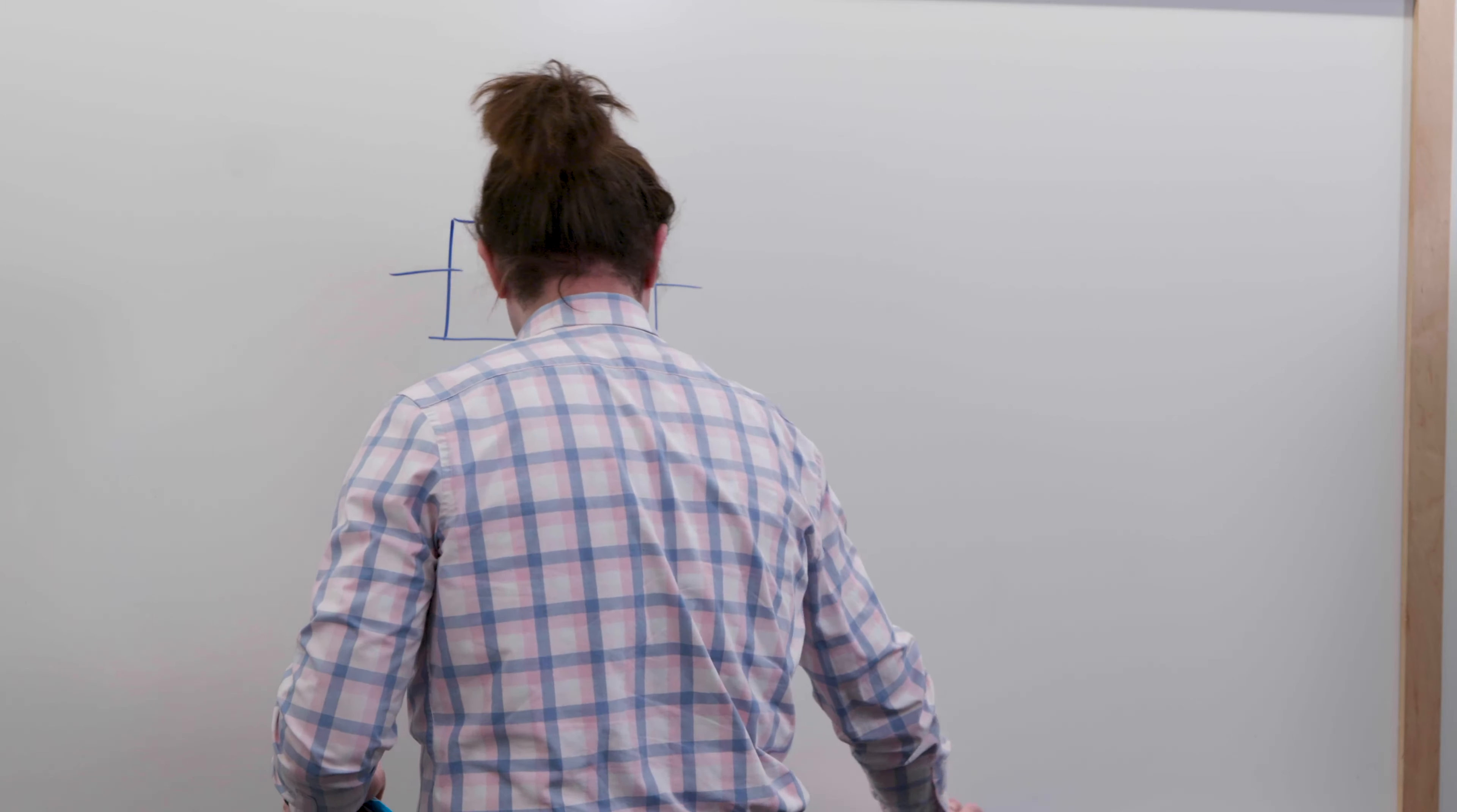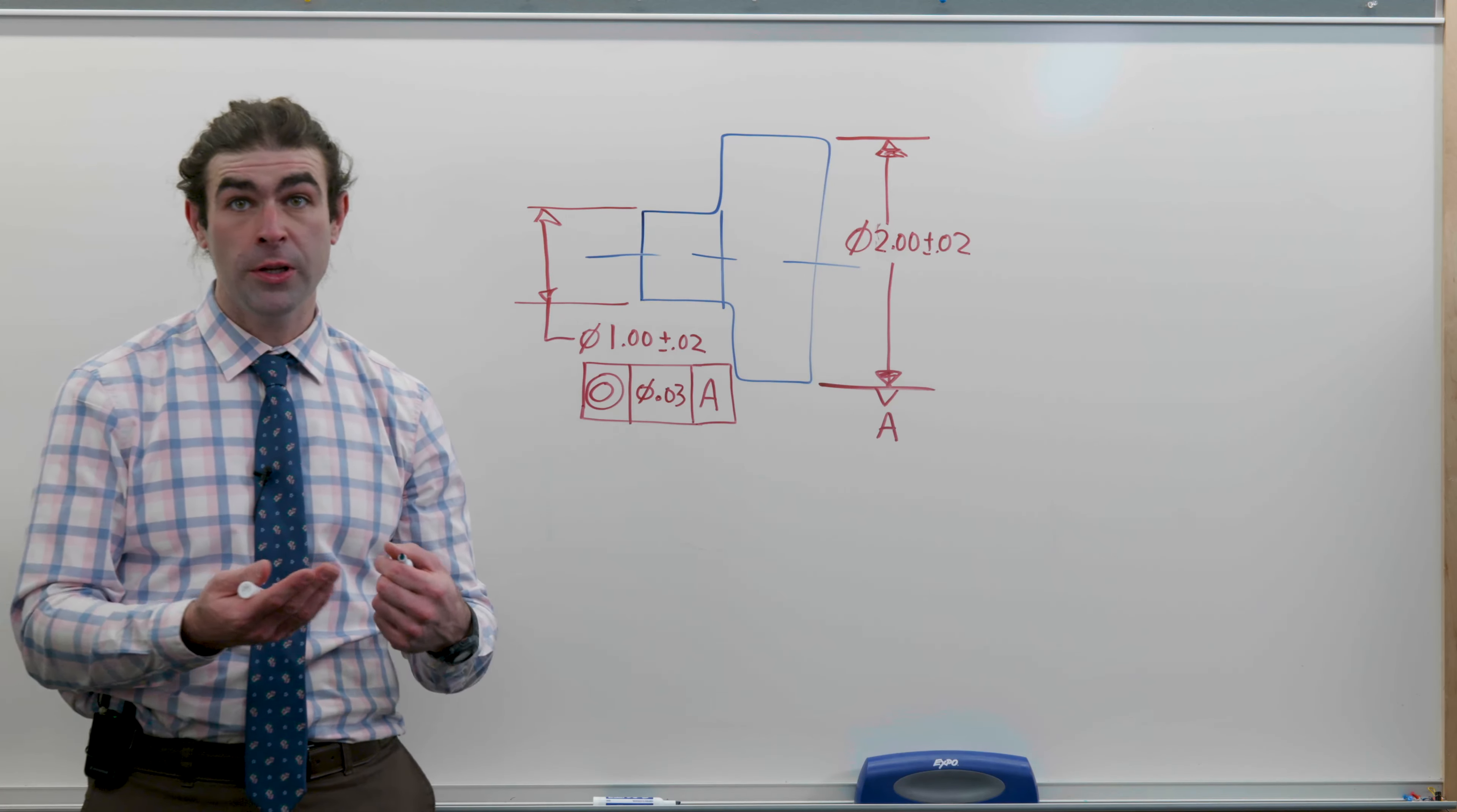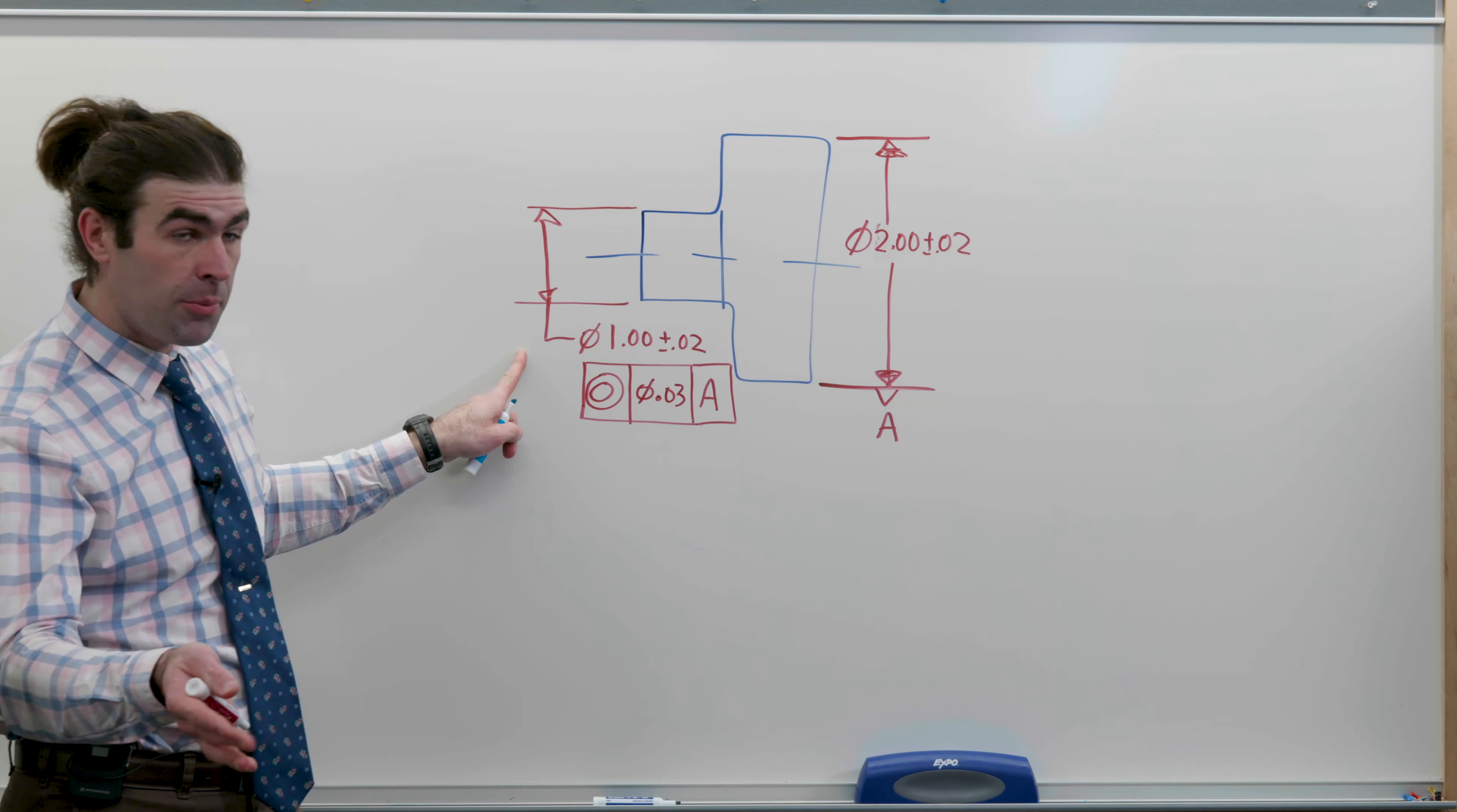Let me give you an example. Here's what it would typically look like on a drawing. You've got a diameter that's identified as a datum, so we're going to get the axis from that. We've got another feature—in this case a diameter, but it doesn't have to be.